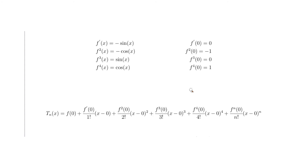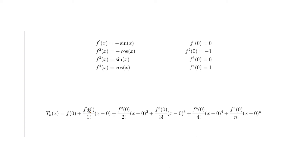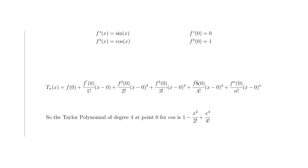Now we plug all these values into the Taylor polynomial formula, with a equal to zero. The function at zero was 1, so we place a 1 in the first position. The first derivative is 0 over 1 factorial; the second derivative gives minus 1; the third gives 0; the fourth gives 1. The (x minus 0) terms simplify to x, x squared, x cubed, and x to the fourth.